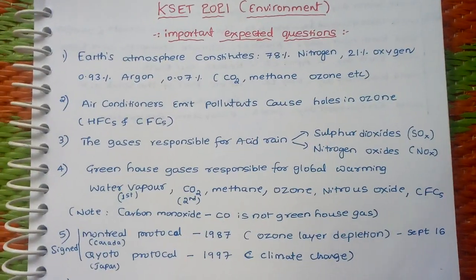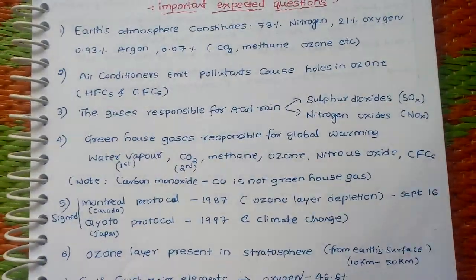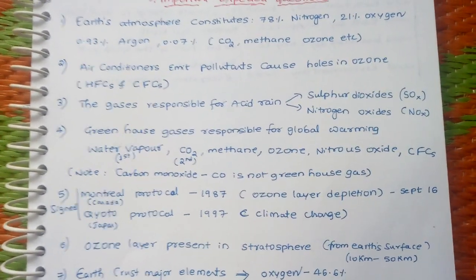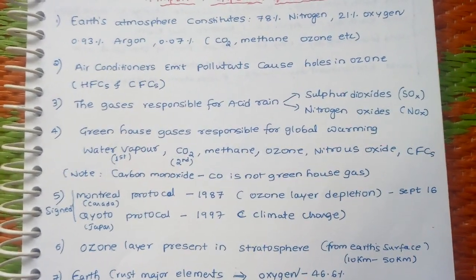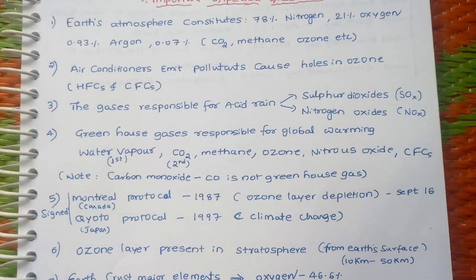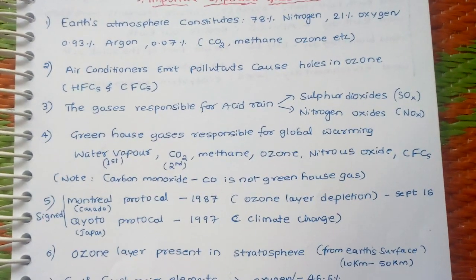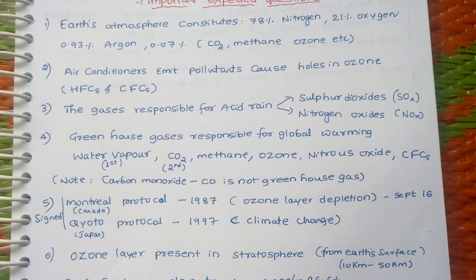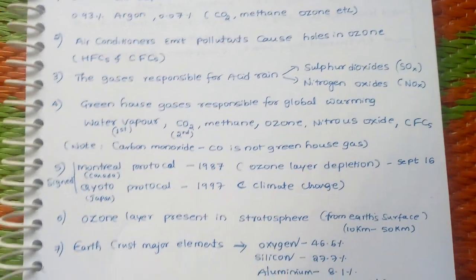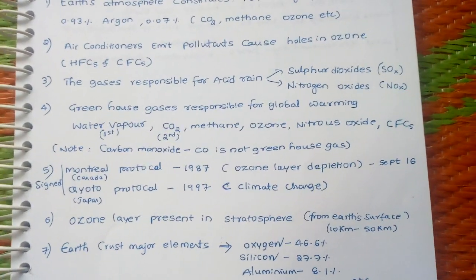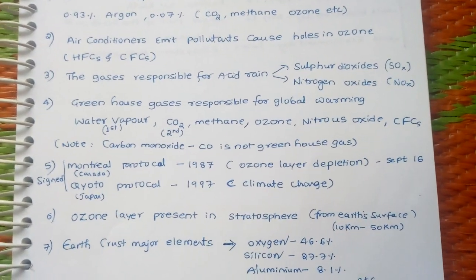Air conditioners emit pollutants that cause holes in the Ozone layer, due to HFCs (Hydrofluorocarbons) and CFCs (Chlorofluorocarbons). The gases responsible for Acid Rain are Sulphur Dioxide and Nitrogen Oxides.